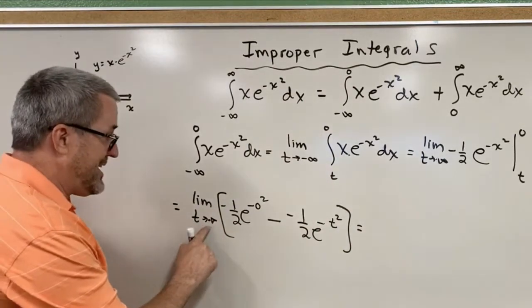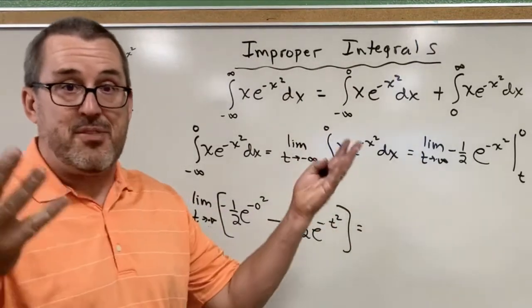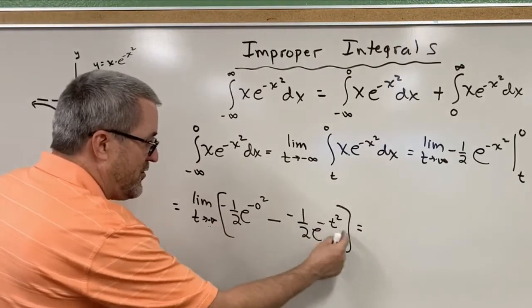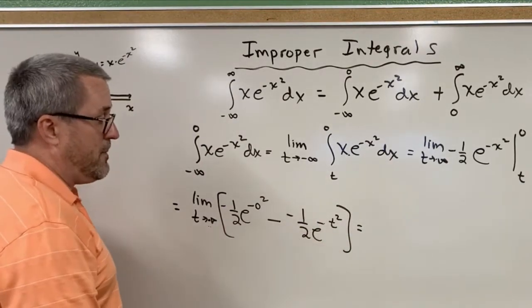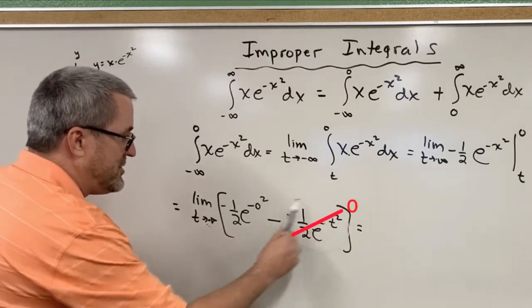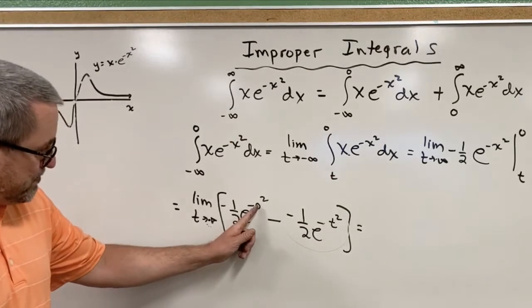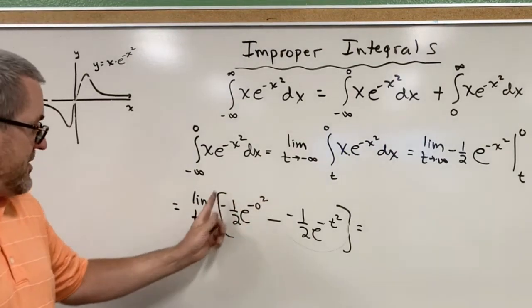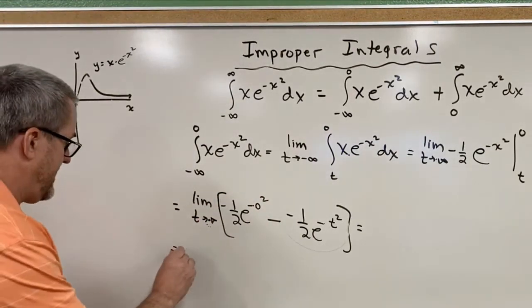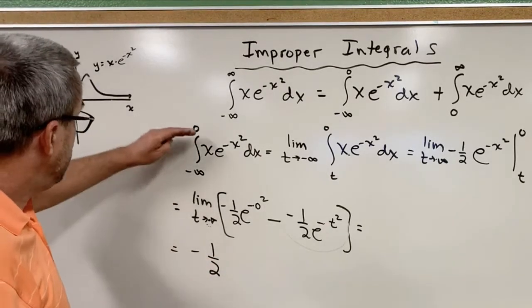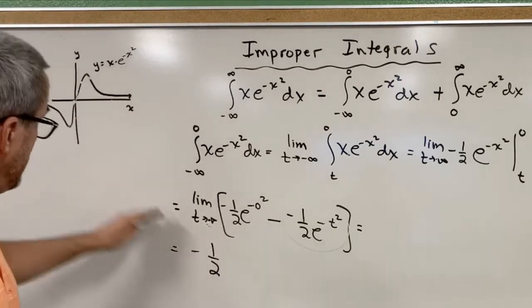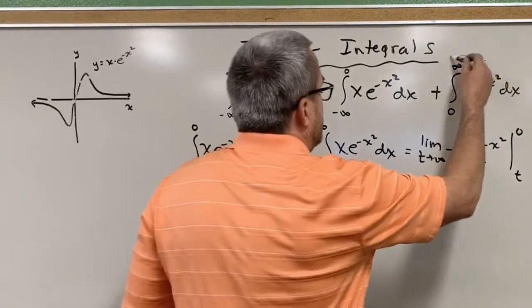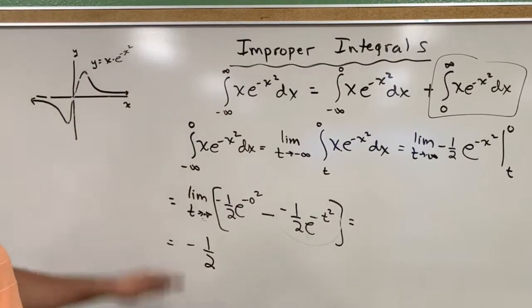So as t goes off to negative infinity, the term negative one-half e to the negative t squared approaches zero. Over here, zero squared is zero, negative zero is zero, e to the zero is one — so this becomes just negative one-half. From negative infinity to zero, we've accumulated a negative one-half: one-half area below the x-axis. We should expect to see a similar result on the right side, but positive one-half.